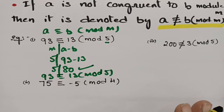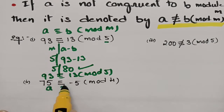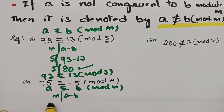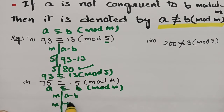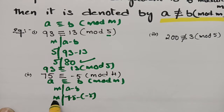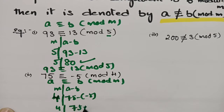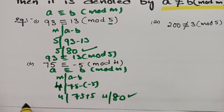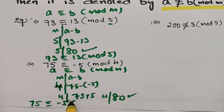For the next example, comparing with A ≡ B (mod M), M should divide A minus B. Here A is 75, B is −5, and M is 4. So 4 should divide 75 minus (−5), which is 75 plus 5 equals 80. And 4 clearly divides 80. Therefore, 75 ≡ −5 (mod 4).